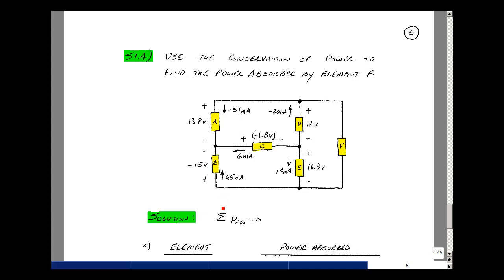For element B, we have the current entering the plus terminal, leaving the minus, and so the product of these two would be minus 15 volts times 45 milliamps, which equals minus 675 milliwatts.